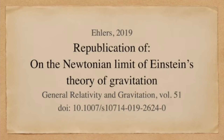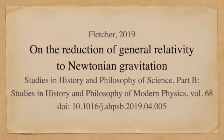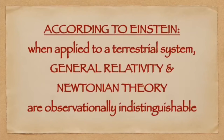Newtonian theory has neither been superseded nor discarded. A logical consequence of all of this is that if you are a Flerf and the Earth is the entire universe, then there is no distinction between Einsteinian and Newtonian theory. There's no evidence that general relativity is correct, nor is there any evidence that Newtonian theory is inaccurate or inadequate.